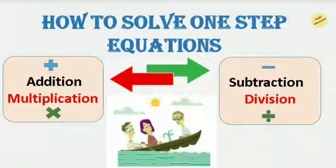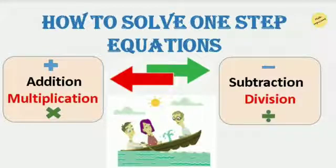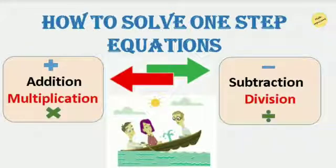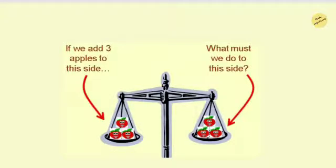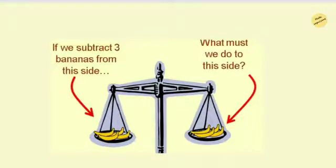Hello everyone, welcome to Math Cognizant. This video reviews how to solve one-step equations. Before that, you should know what equations are. Equations are mathematical statements in which two expressions are set equal to each other. In simple words, equation means equality — that is the equal sign. Equations are all about equating one quantity with another.